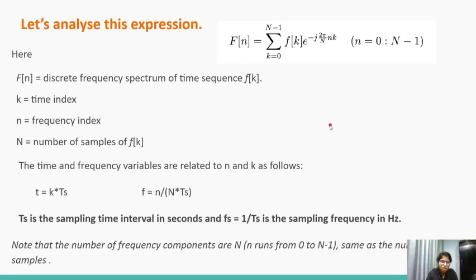The time and frequency variables are related to n and k as follows: t equals k times Ts and f equals n divided by N times Ts. What this equation means is that the fundamental frequency is 1 over N times Ts Hertz and the frequency components are taken as the fundamental frequency and its harmonics. Ts is the sampling time interval and fs is the sampling frequency in Hertz.